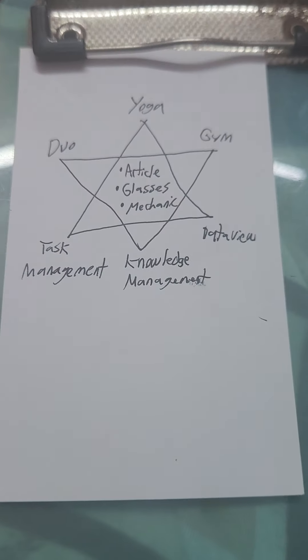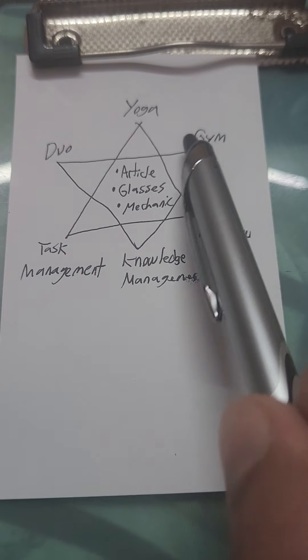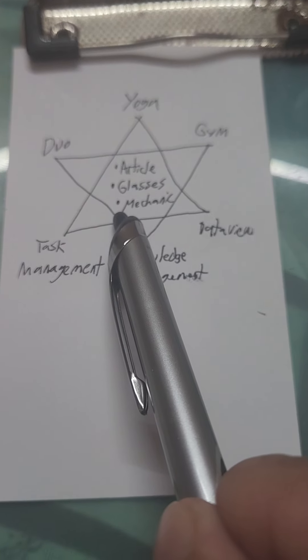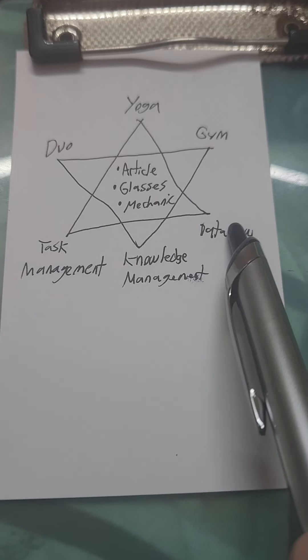So there is the hexagram to-do list: three things that make you happy, three things you have to get done today, and three things you need to research.